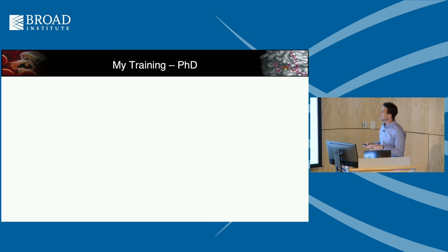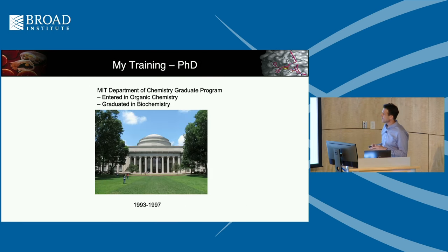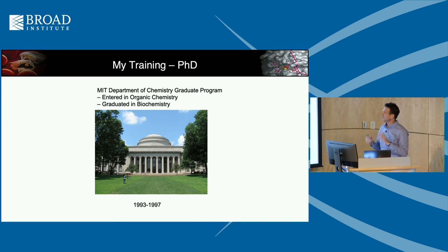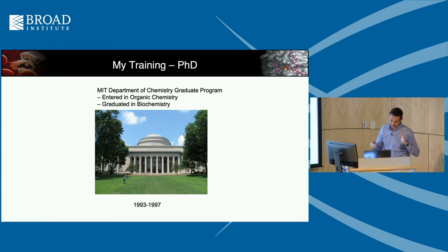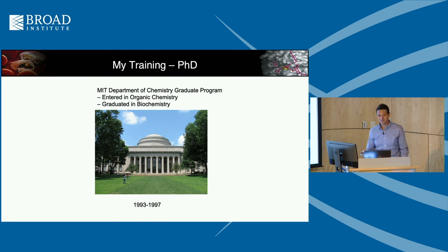My training was here at MIT from 1993 to 1997. I came into the Department of Chemistry thinking I wanted to do pure organic chemistry, and then eventually realized I wanted to apply what I was making — the molecules. So I ended up finishing in biochemistry. I worked for Hidde Ploegh here in biology, so I had to have a secondary mentor in chemistry.